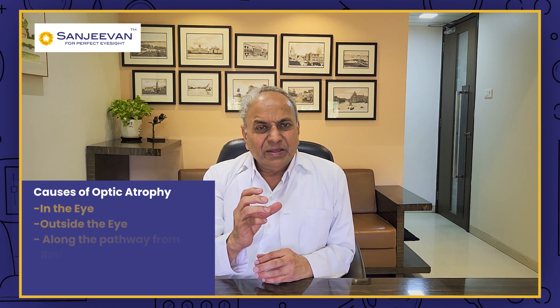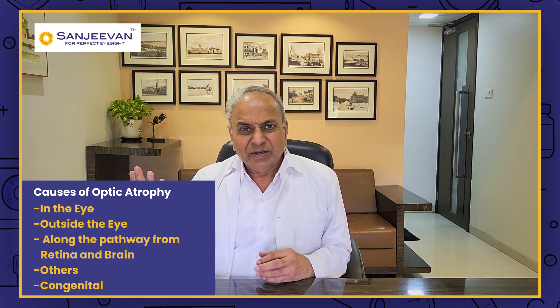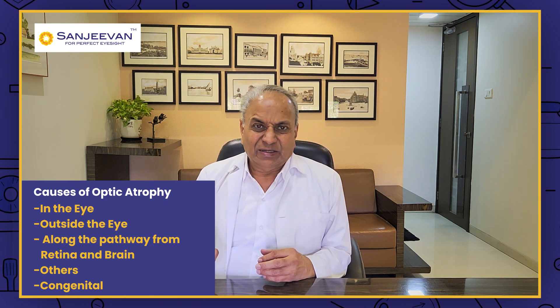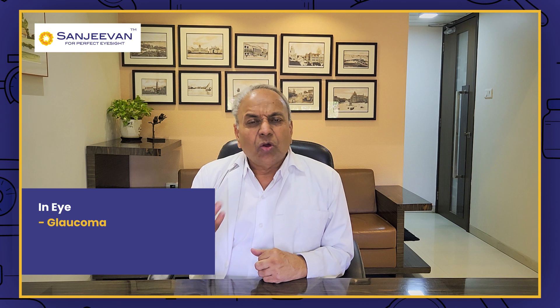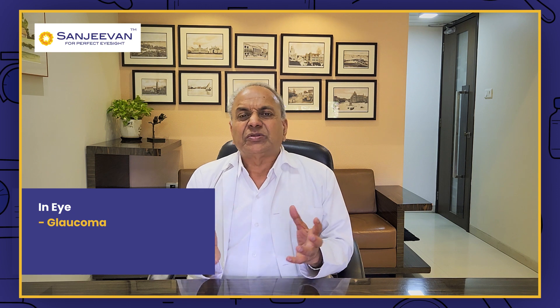Optic atrophy affects 1 in 35,000 people. What are the causes of optic atrophy? We can divide the causes into: within the eye, outside the eye along the pathway from retina to brain, and others. In the eye, one cause of optic atrophy is glaucoma, where intraocular pressure increases, creating pressure on the head of the optic nerve and causing atrophy of the optic nerve.